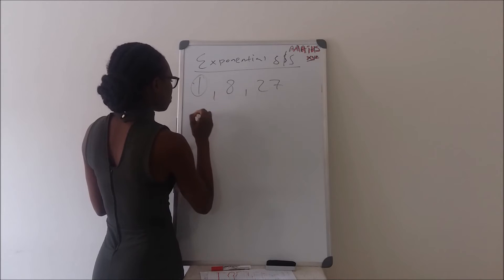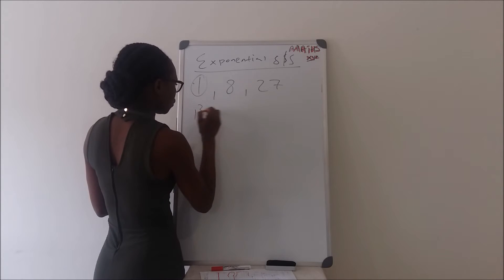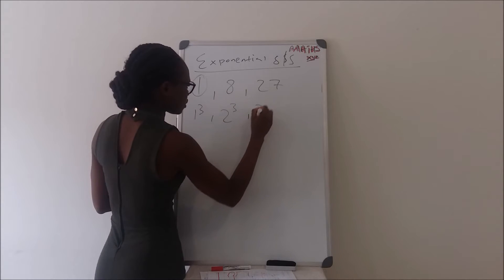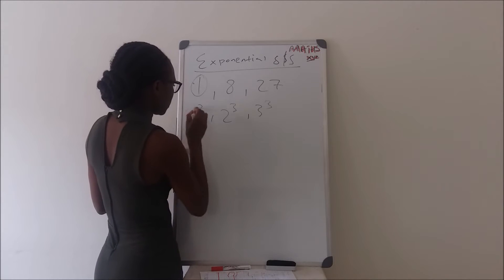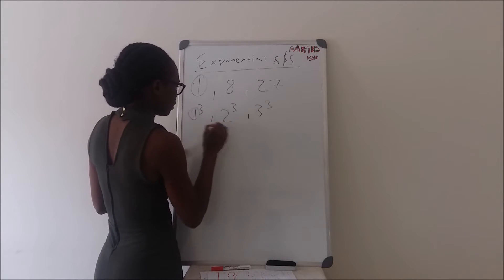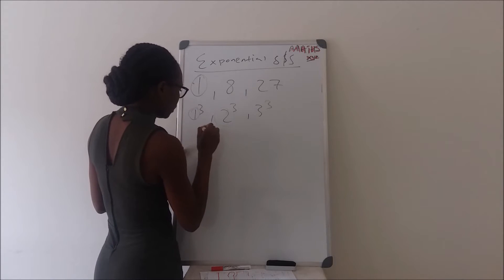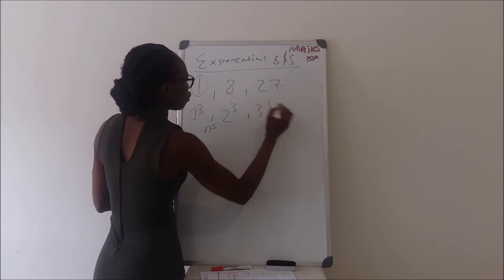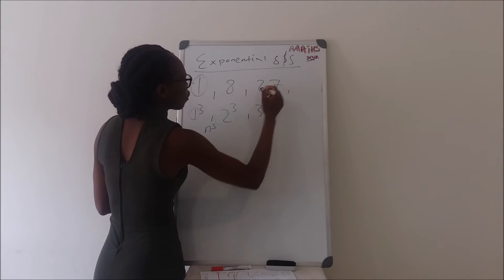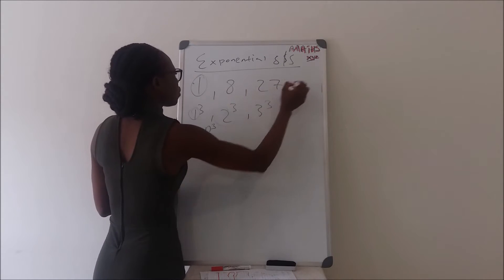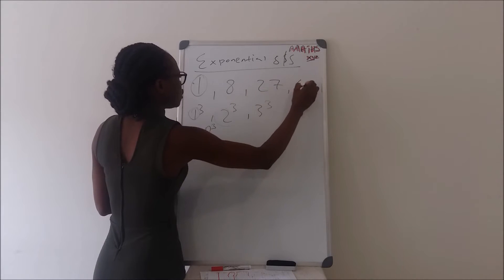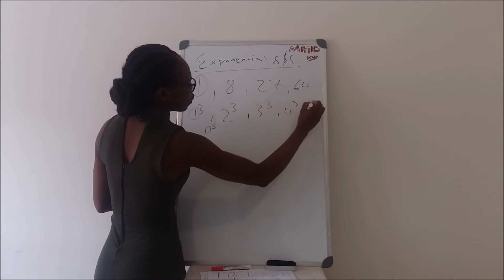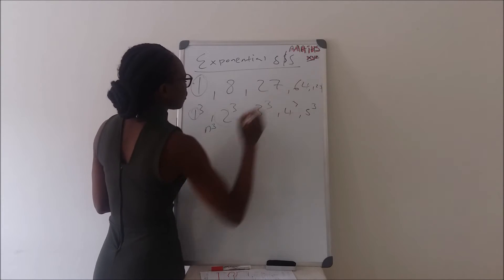For example, this one is one cubed, that one is two cubed, and that one is three cubed. So you can see that it is n cubed. Any term to the cube gives you this pattern. So this one was going to be 64 because it was going to be four cubed, and this one was going to be five cubed, which is 125.